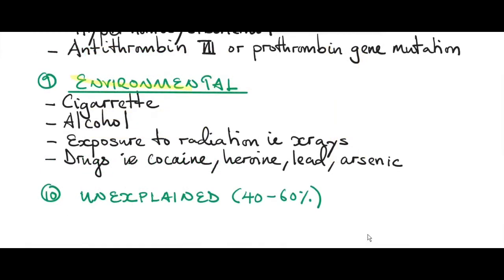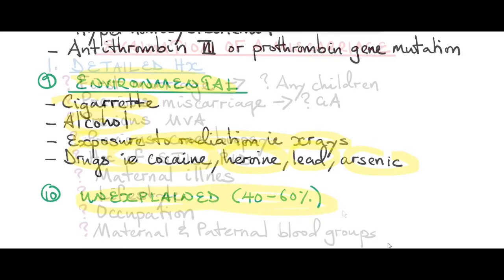Other causes of miscarriage include environmental factors like cigarette smoking, alcohol consumption, exposure to radiation like x-rays, use of drugs like cocaine and heroin, and exposure to lead and arsenic. However, 40-60% of miscarriages remain of unknown cause.